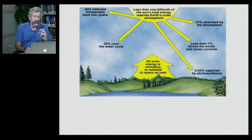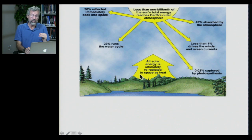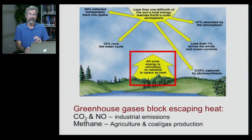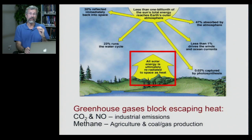If we look at what's happening between the energy that comes in from the sun, energy is ultimately radiated back out to space as heat. But if we have too much of certain materials in the air — what are called greenhouse gases — greenhouse gases absorb the heat and don't let it radiate back into space.